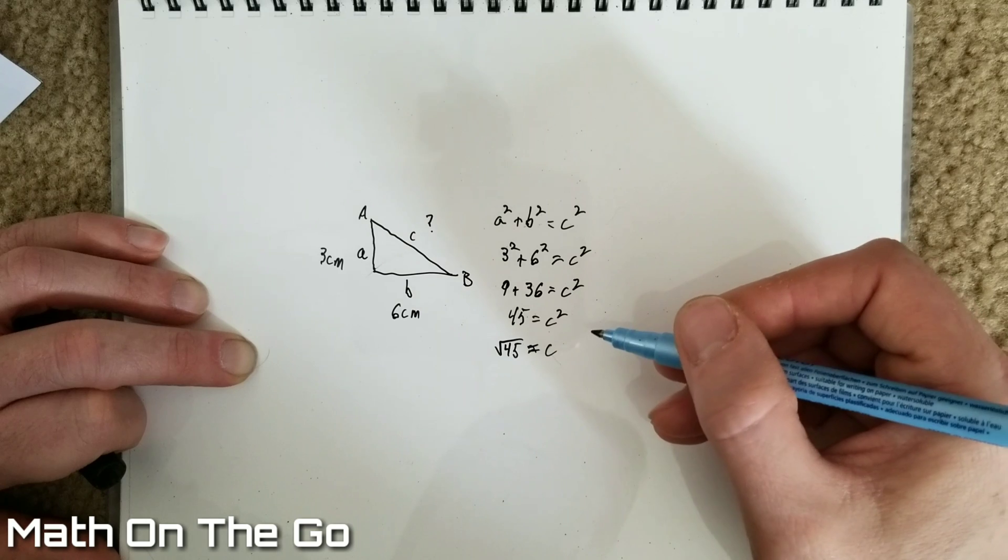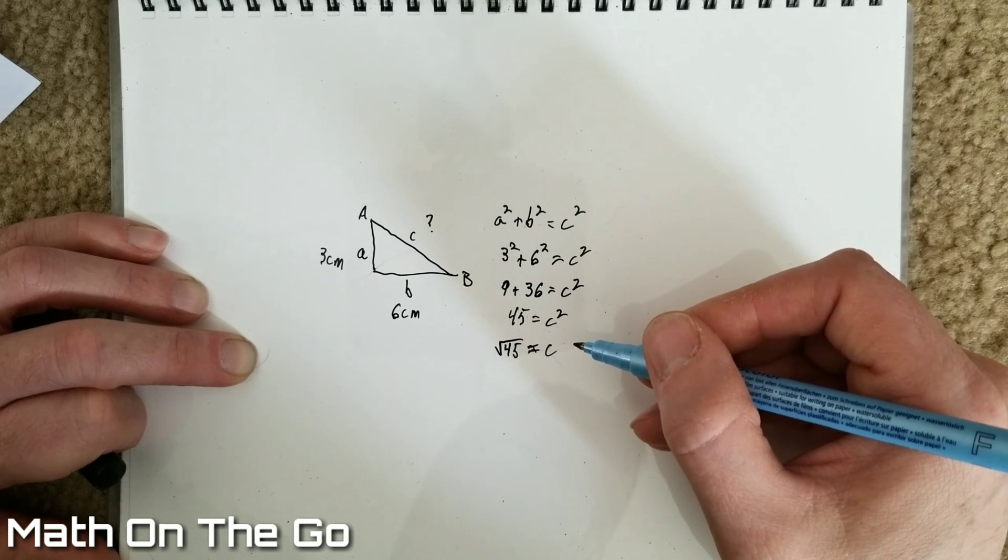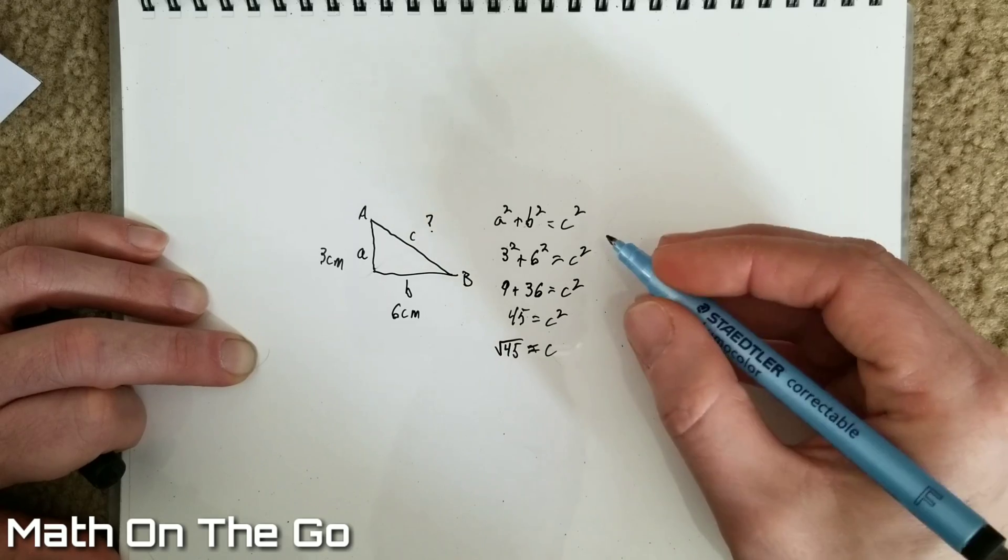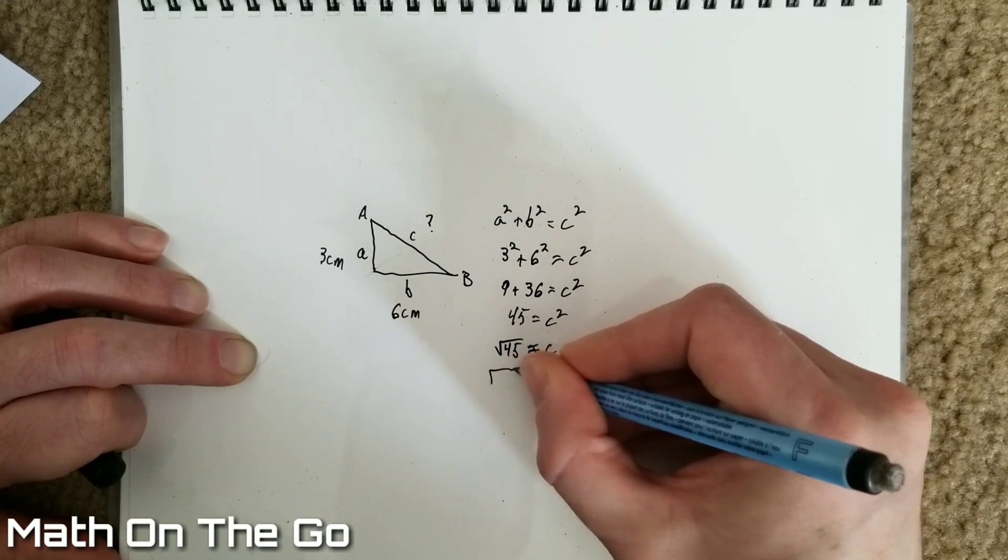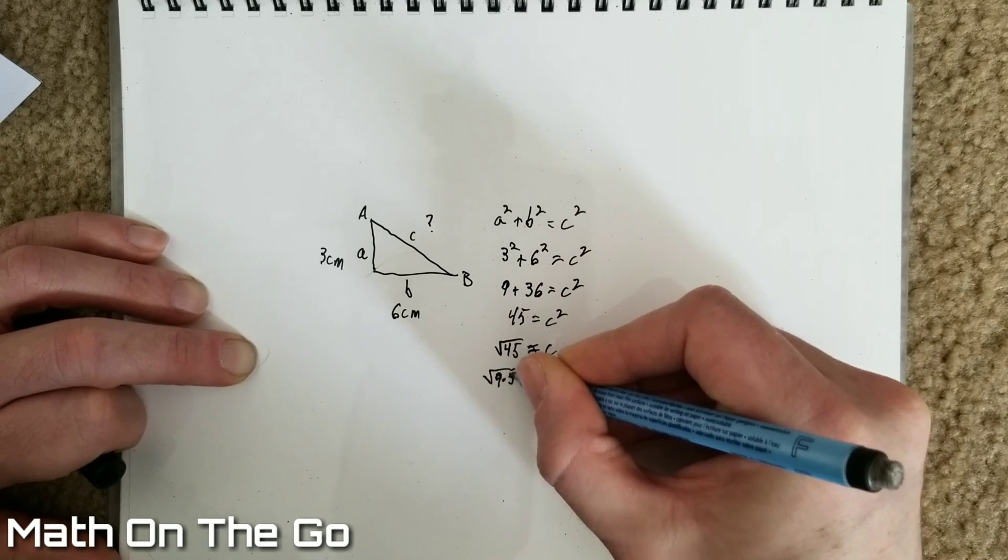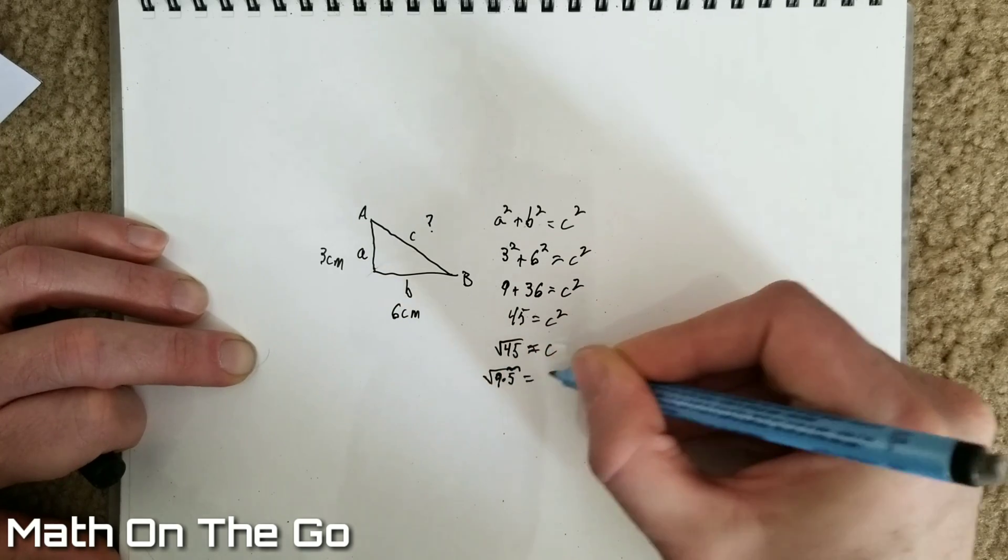Now, the square root of 45 is not a perfect square, so to figure out what square root of 45 equals, we will factor it. So, we end up with nine times five equals C.